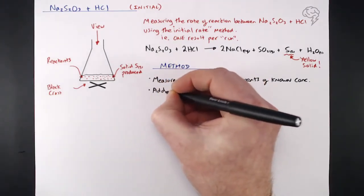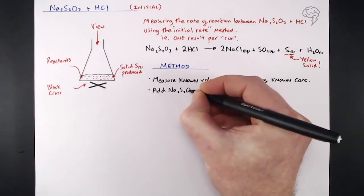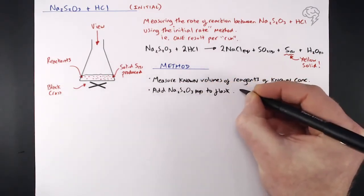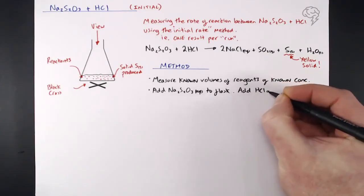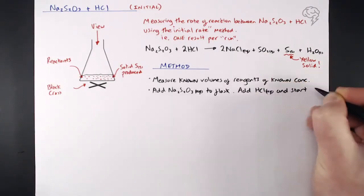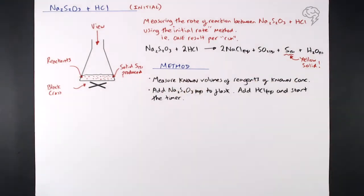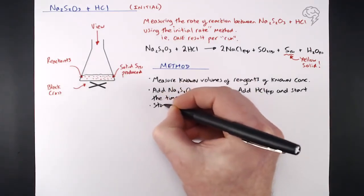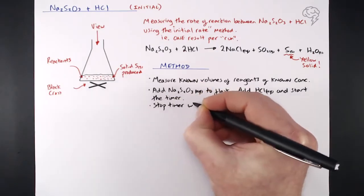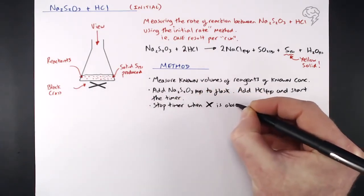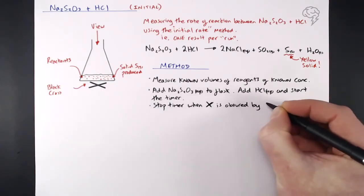When we're ready, what we do is we add our sodium thiosulfate to the flask. And because the HCl is usually a smaller volume, we add that second. And once we've added our HCl, as soon as we've done that, we need to start the timer. Usually give it a quick swirl, then put it back down on the cross. And obviously start your timer as soon as our HCl hits the sodium thiosulfate in the flask. We stop our timer when the X is obscured by the sulfur. So we can no longer see that black cross through the solution because of all that sulfur being produced.